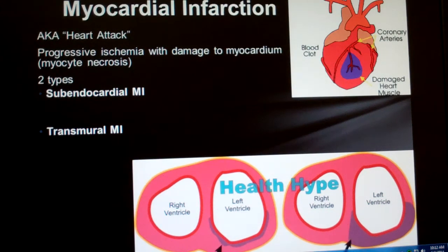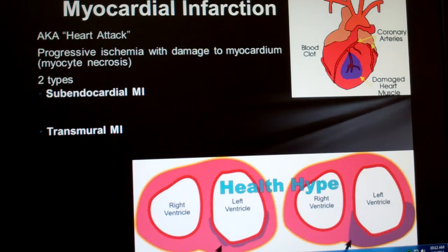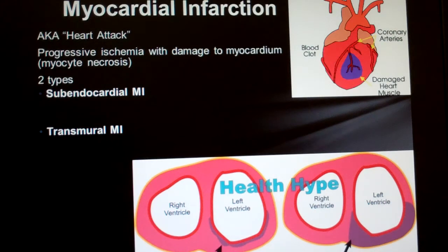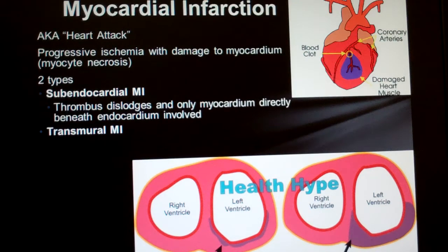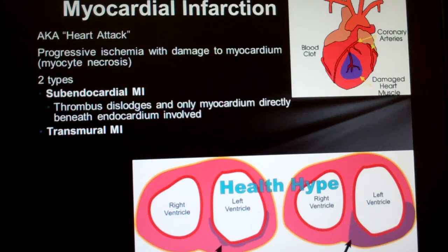Now we're on the big one: MI, or myocardial infarction, or heart attack. To be classified as an MI, there must be actual damage to the myocardium — the muscle tissue of the heart — caused by ischemia, or lack of oxygen, for long enough to kill the tissue. We break MIs into two categories: subendocardial and transmural. Subendocardial is less severe, involving only the tissue directly below the endocardium, while transmural MI means damage goes completely through all layers of the heart, including the epicardium.